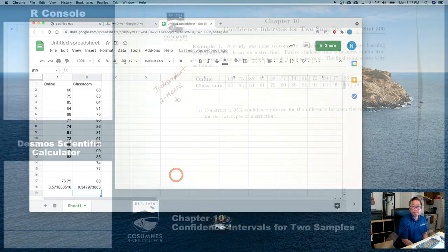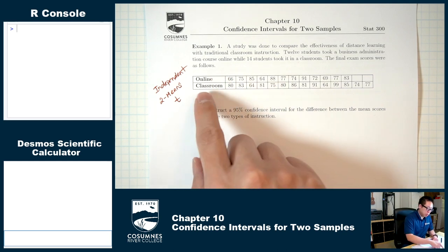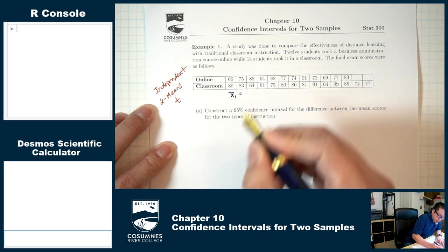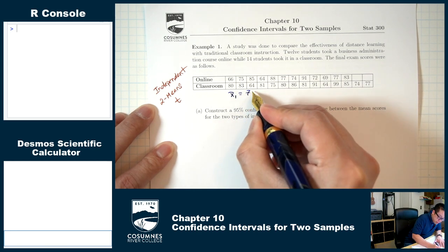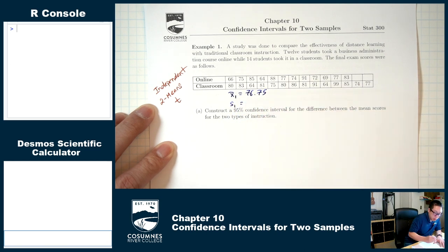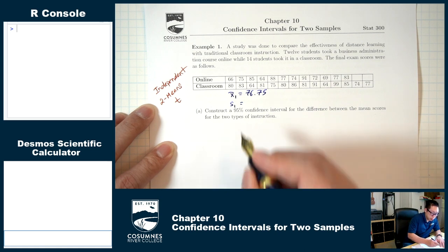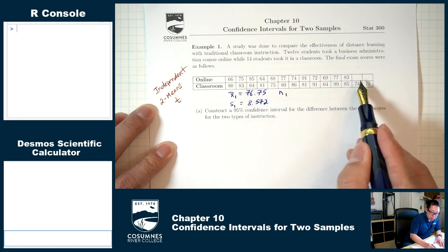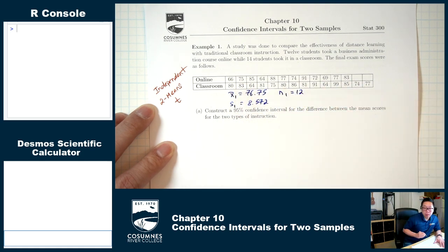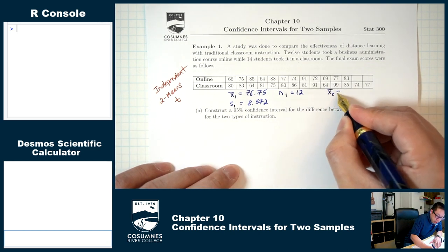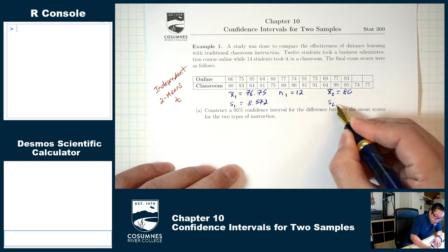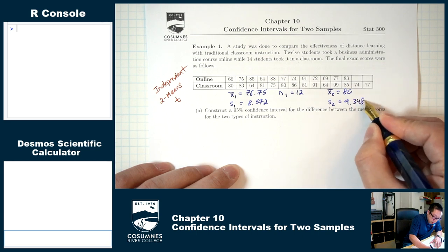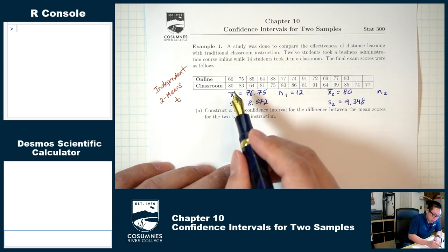Let my ones represent online and my twos represent classroom. x-1-bar, the mean for online, was 76.75. s-1, the standard deviation for online rounded to three decimal places, is 8.572. n-1, the sample size for online, is 12. x-2-bar, the mean for classroom, was 80. s-2, the standard deviation for classroom rounded to three decimal places, is 9.348. n-2, the number of classroom students, is 14.